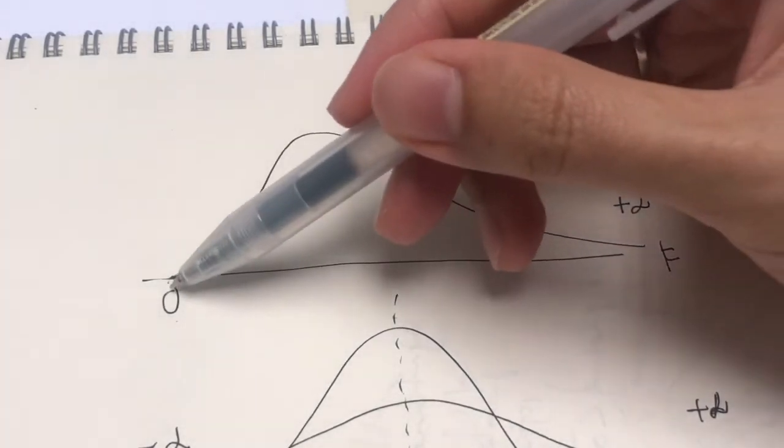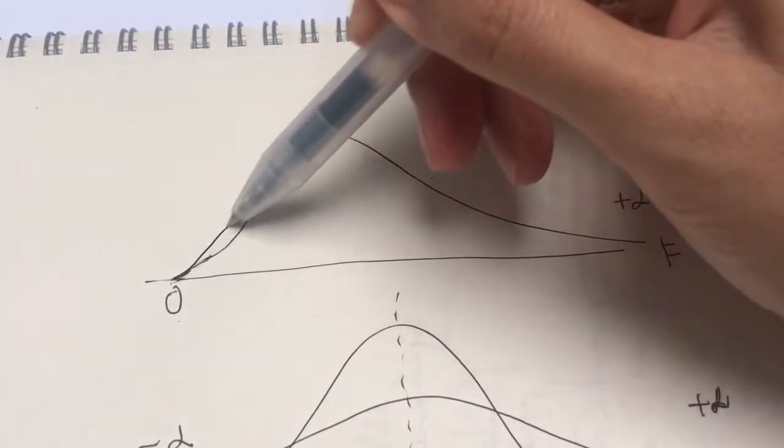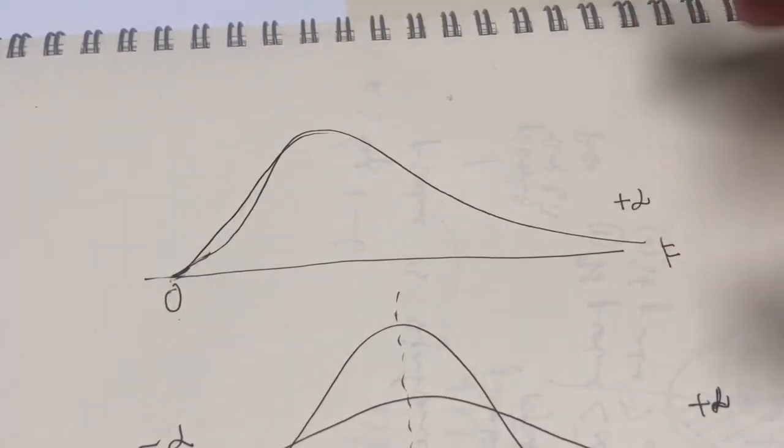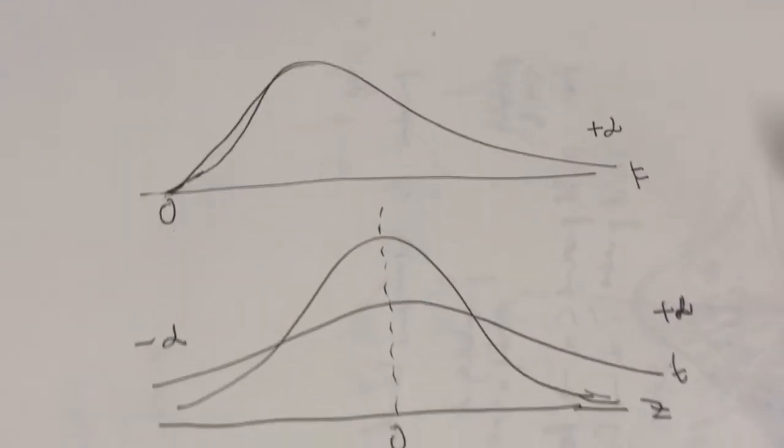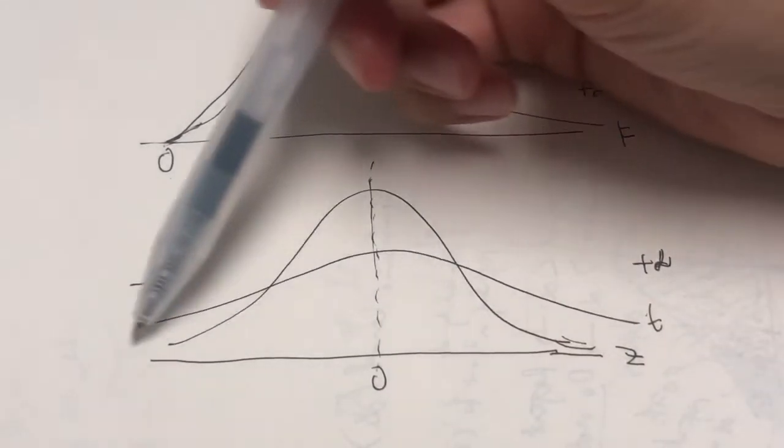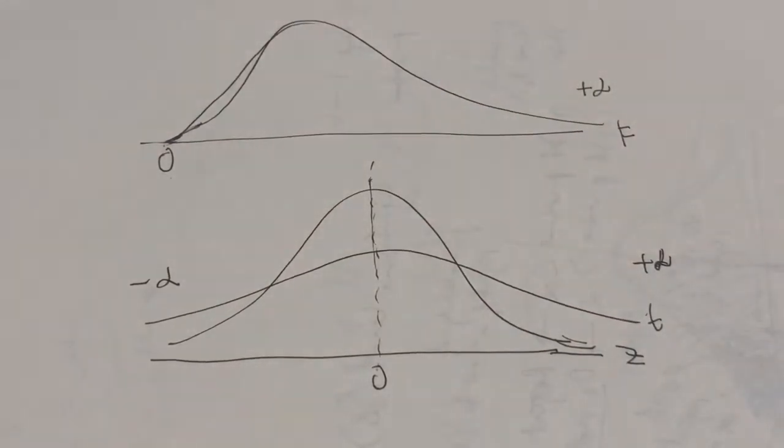So if this is 0, this is what it means by a positively skewed distribution. Whereas if you can compare here with the Z and the T, the 0 is in the center, right? So if 0 is in the center, you can have the negative values to the left and positive values to the right.